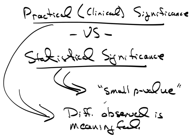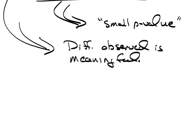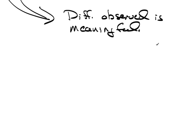You can have clinical significance in observed values that lack statistical significance, so you can't infer it to the population. Likewise, you could have statistical significance — a small p-value — but the observed values do not have any practical application or use. Here's a quick example.